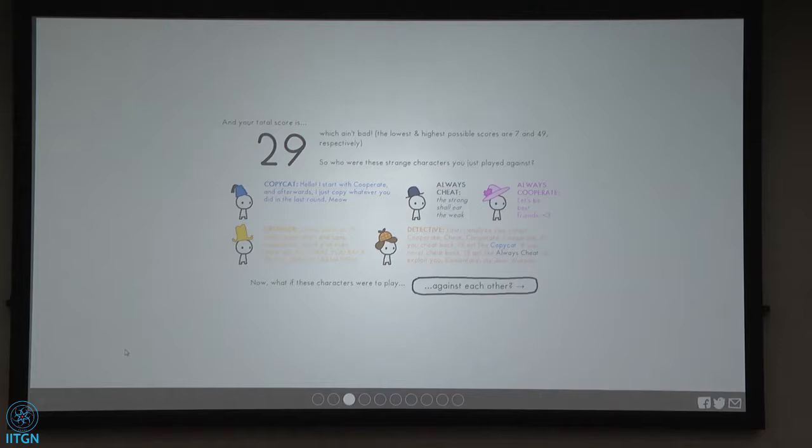After that, depending on what you did with detective, he's going to either behave like always cheat or copycat. So, if you ever cheated him, he's going to behave like copycat. If you ever cooperated, then he's going to behave like always cheat. Which is like what some of you were doing when you sensed that this person's being nice. Let's just get as much out of it as we can. So, that's what detective does. If the detective knows that you're capable of cheating, then he's going to go smart and behave like copycat. If he thinks that you're going to be always nice, he's going to just take advantage of you.